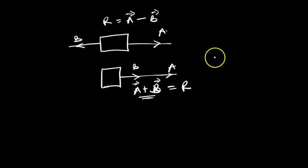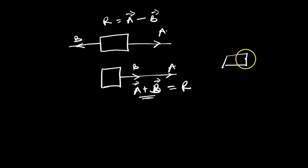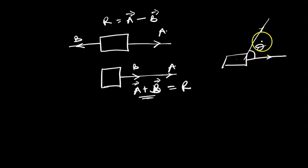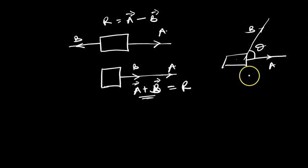The challenge becomes when you have this same object but it's being pulled by two forces inclined at an angle to each other. This is where parallelogram law of vectors becomes very important. If force A and force B are inclined at an angle to each other, we'll have to employ parallelogram law of vectors to find the resultant.